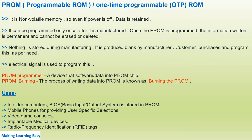Now let's see PROM — Programmable ROM, also called One-Time Programmable ROM or OTP ROM. It is non-volatile memory and can be programmed only once after it is manufactured. Once PROM is programmed, the information written is permanent and cannot be erased or deleted. The manufacturer does not store anything at manufacturing time — it is produced blank, and the customer can buy it and store data as needed, but only once.